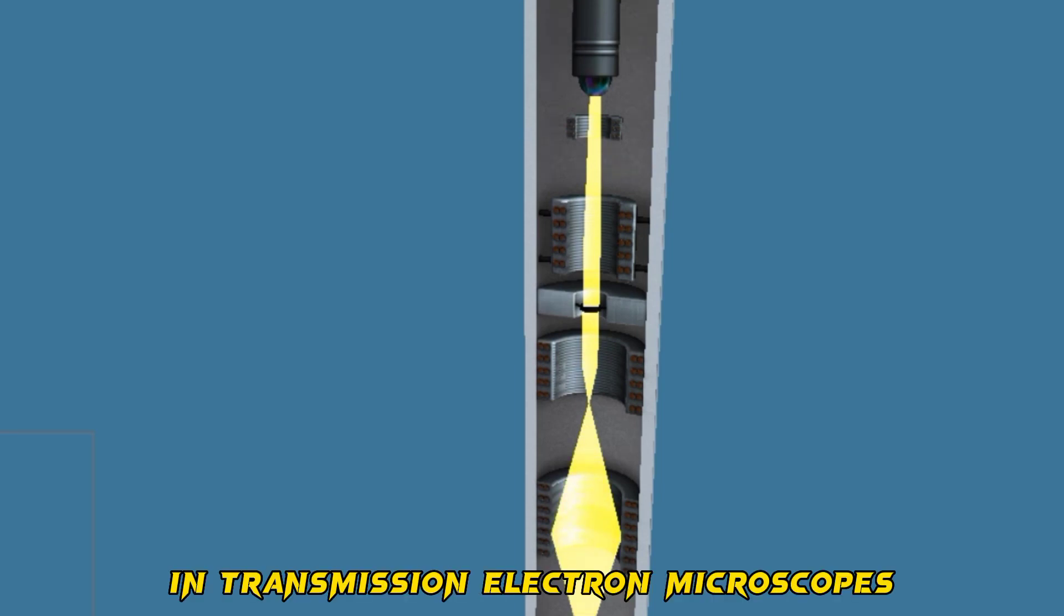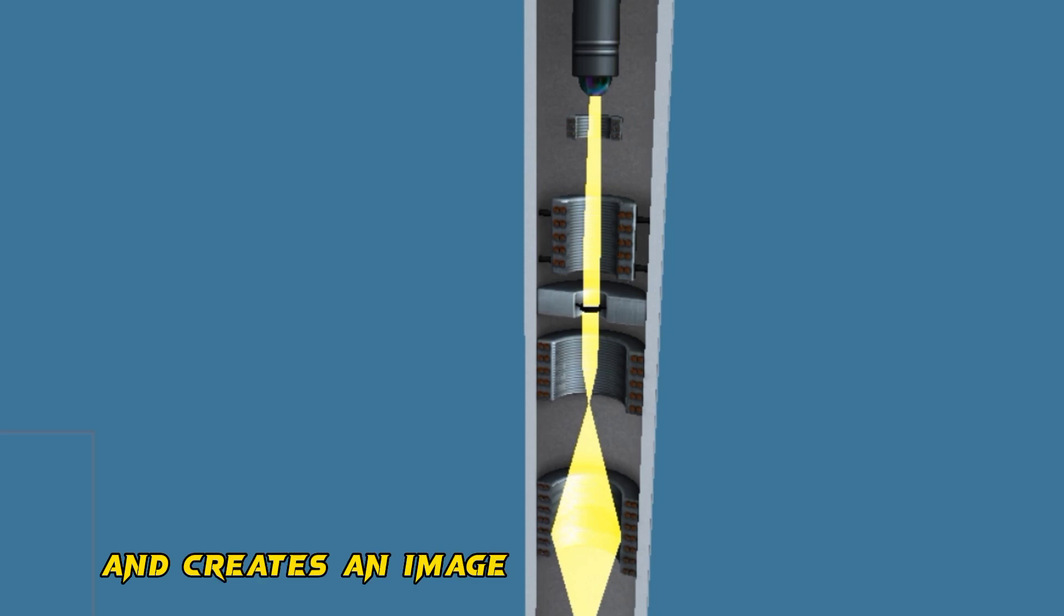In transmission electron microscopes, the beam passes through the thin sample and creates an image using electromagnetic lenses.